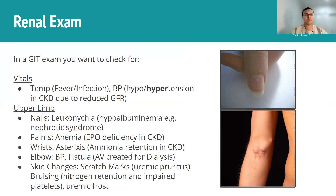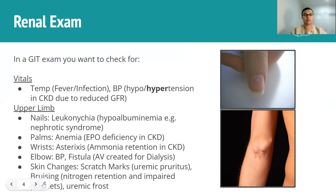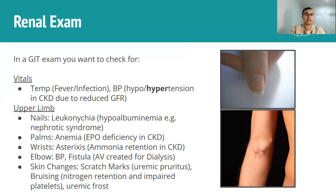Next, at the elbows, you can do your usual check for blood pressure — you would have already asked in the vitals section, but you can measure it here in the context of a real patient. You can also check for fistulas, which you can palpate and feel for, or sometimes make out visually. As you can see on the image on the right, that sort of lump or bump on the surface of the skin indicates an underlying arteriovenous fistula. These can be a sign of CKD because an arteriovenous fistula is artificially made for the purposes of dialysis.